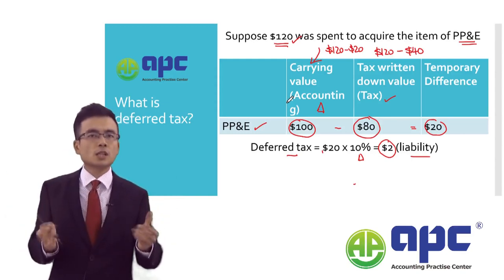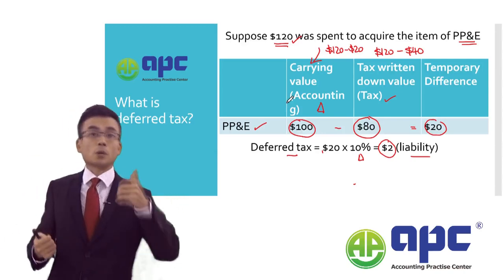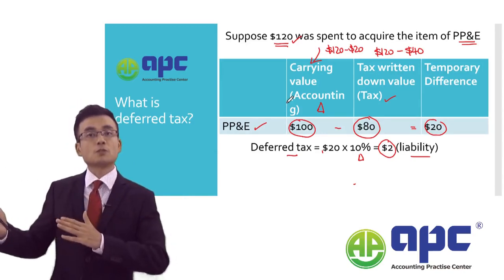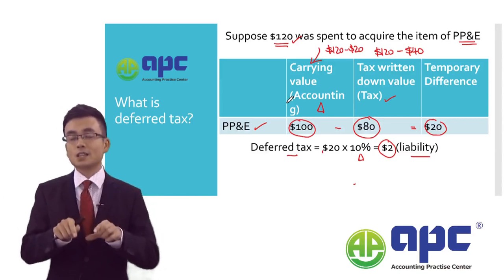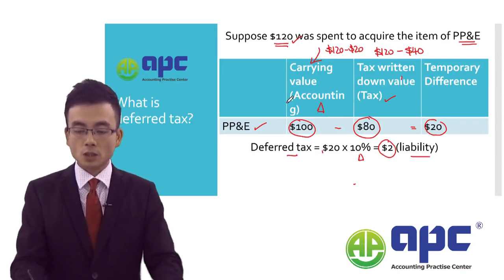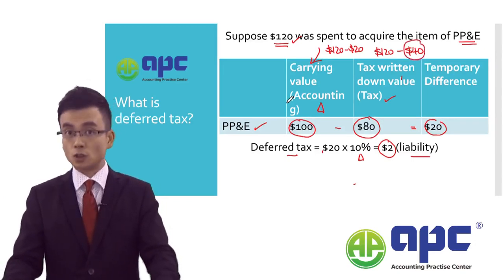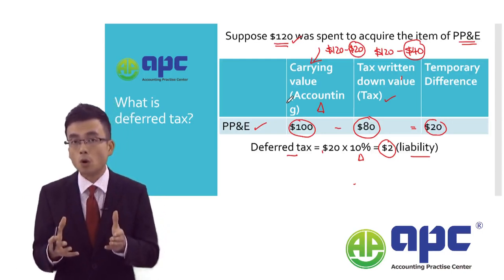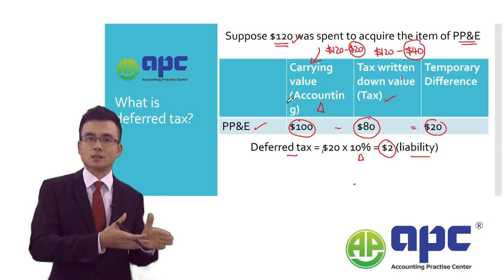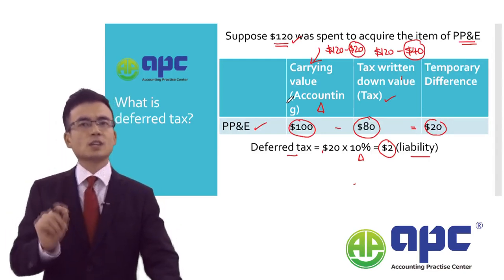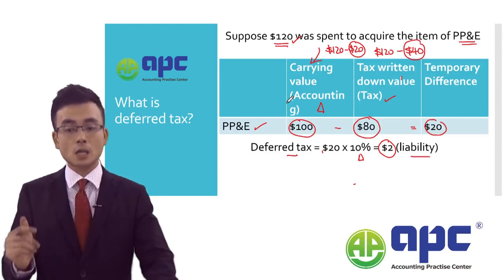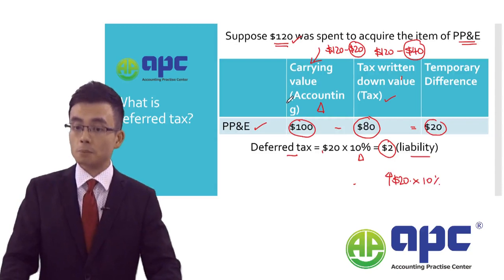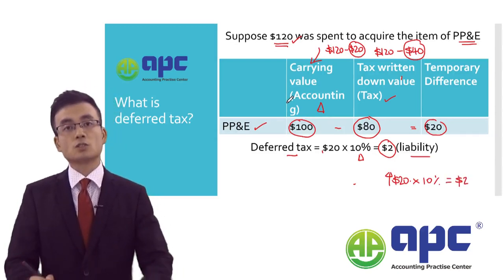there are different rules in accounting and tax. For example, in accounting we depreciate the asset using the straight-line method, but from a tax point of view we may use the reducing balance method. As you can see, from a tax point of view during the year you claim $40 of expense to reduce your profit, but in accounting that's just $20. That means there is $20 more of expenses provided in tax than accounting, so it seems that in the current year you save more tax — you save $2 of tax — because you have $20 more of expenses in tax, times by the current corporate income tax rate of 10%.